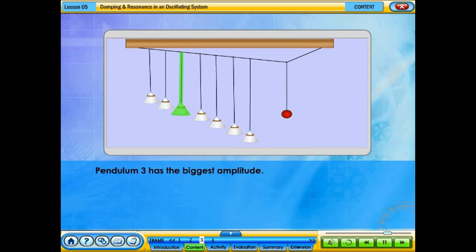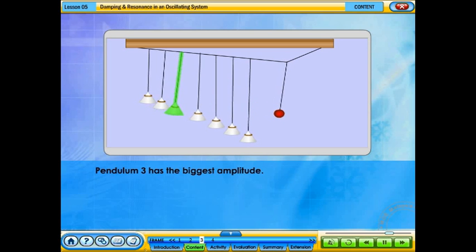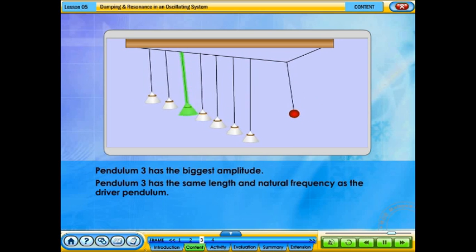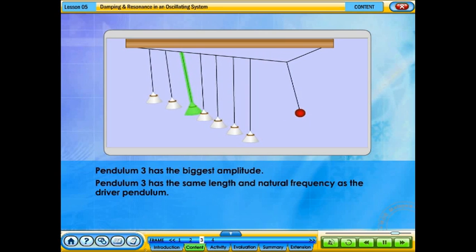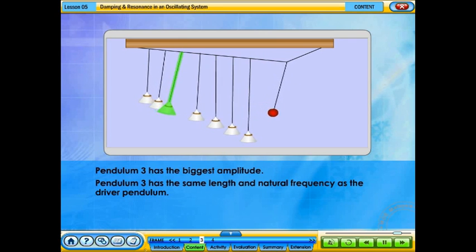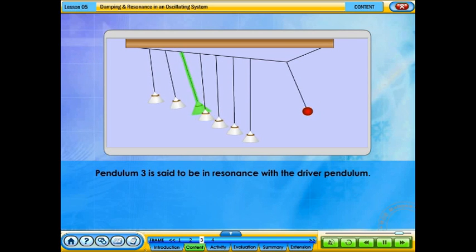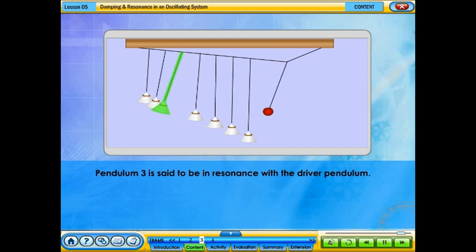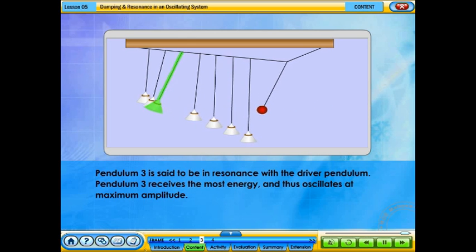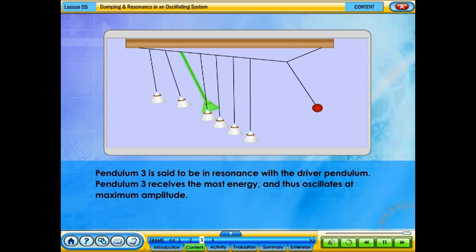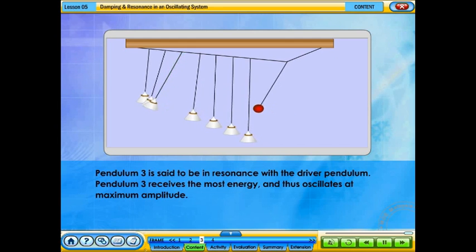Pendulum 3 has the biggest amplitude. Pendulum 3 has the same length and natural frequency as the driver pendulum. Pendulum 3 is said to be in resonance with the driver pendulum. Pendulum 3 receives the most energy and thus oscillates at maximum amplitude.